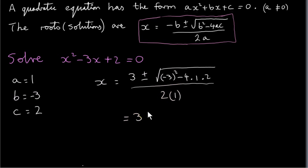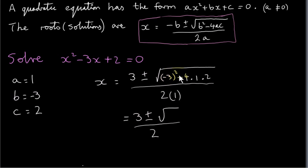So this gives us 3 plus or minus the square root of something over 2. I'm going to work out what's inside the square root sign. Minus 3 squared is plus 9. Plus 9 minus 4 times 1 times 2 — if we multiply minus 4 by 1 by 2, we get minus 8. So we have plus 9 minus 8, that's 1.